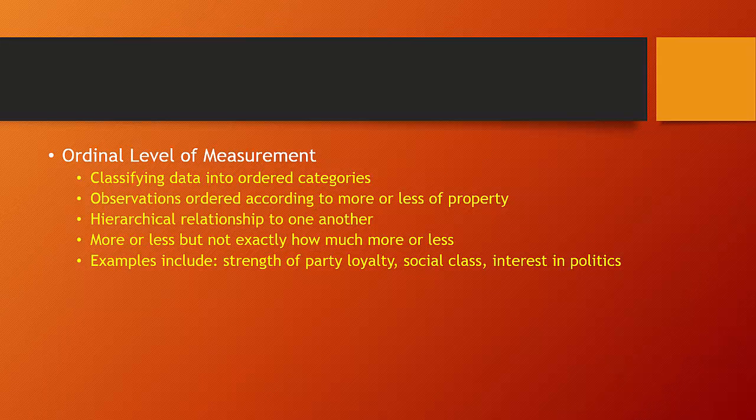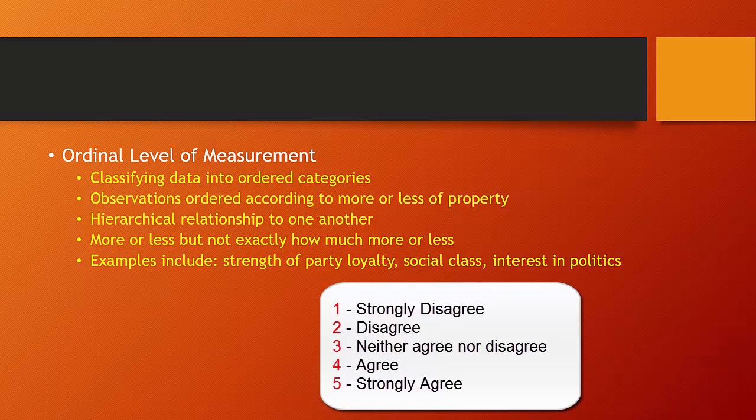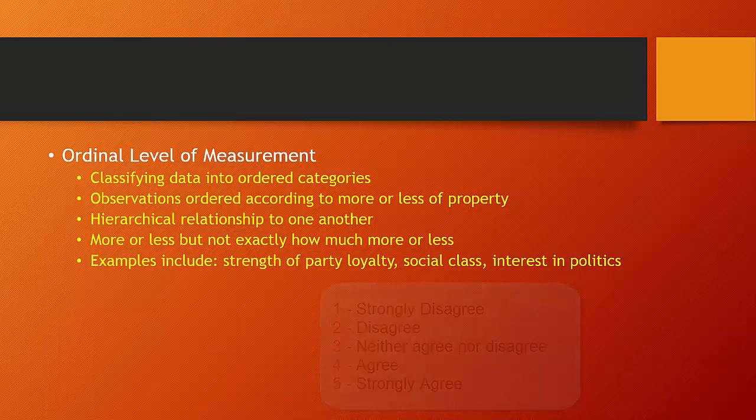At the ordinal level of measurement, we're classifying a variable into sets of ordered categories and then sorting our observations into the appropriate category according to whether they have more or less of the property being measured. The categories stand in a hierarchical relationship to one another and the numbers serve to indicate the orders of the categories. With ordinal level of measurement, we can only say that one observation has more or less of a property than the other. We cannot say how much more.